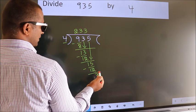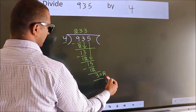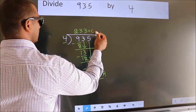No more numbers to bring down. So we stop here. This is our remainder. This is our quotient.